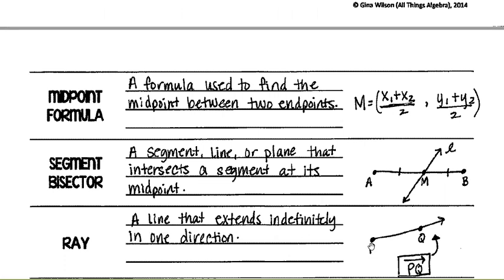Ray: a line that extends indefinitely in one direction. It starts somewhere but keeps going on to infinity and beyond. This is how you denote ray PQ — you start at P with a little arrow pointing one way. A line has two arrows on both sides, but this is a ray.